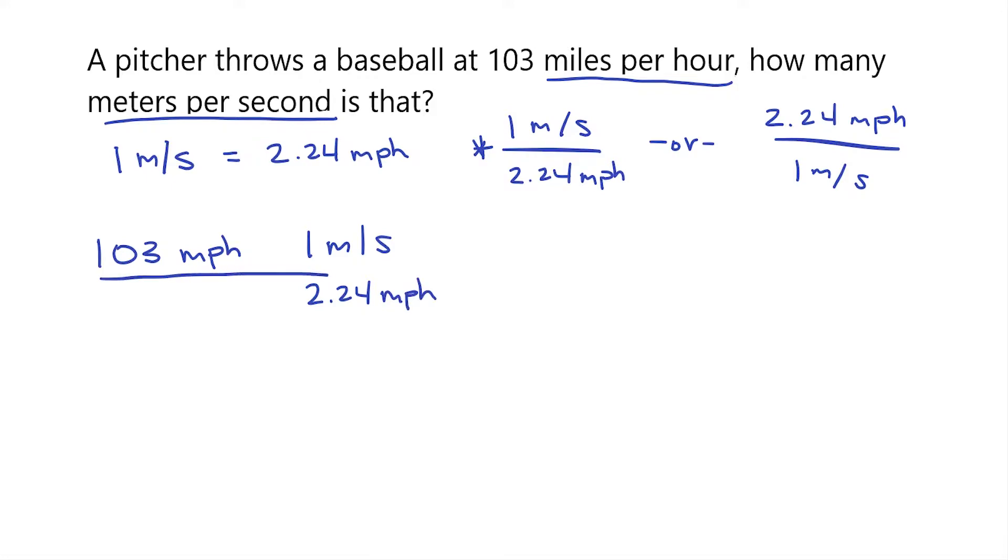Now let's go ahead and solve. The way that we'll do that is we will multiply our numerator. So 103 times 1 is still 103. Next I need to multiply my units, so miles per hour times meters per second.